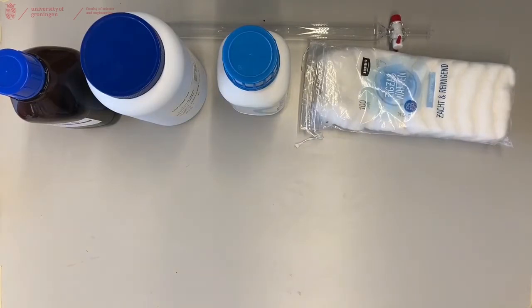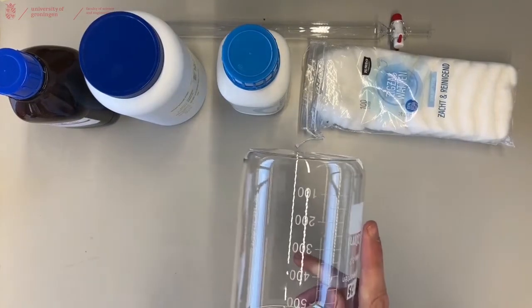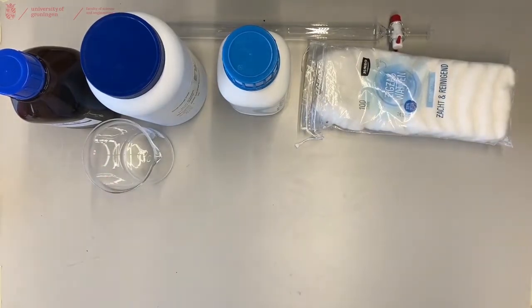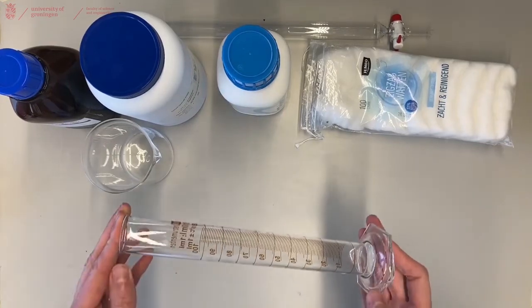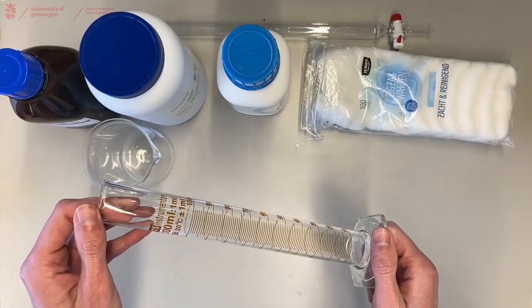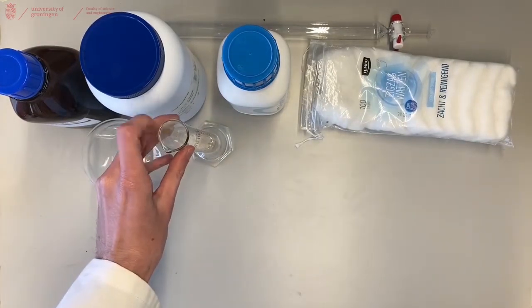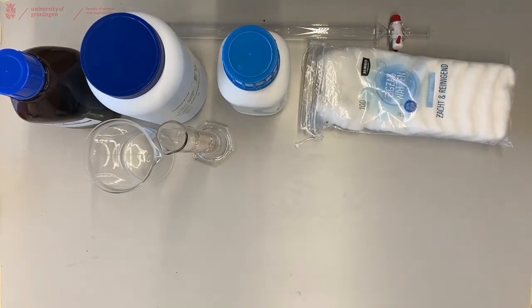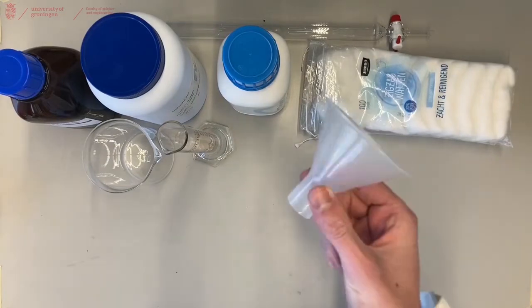You will need to mix your silica and your solvent, and for that it's handy to use a big beaker. And to accurately determine the mixture of your solvents, you can use a measuring cylinder. To add solids to the column, it's handy to have a big funnel.